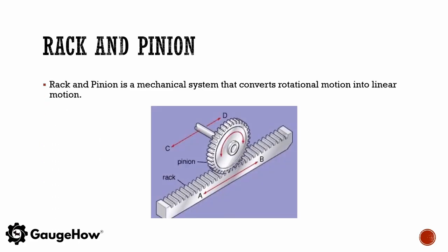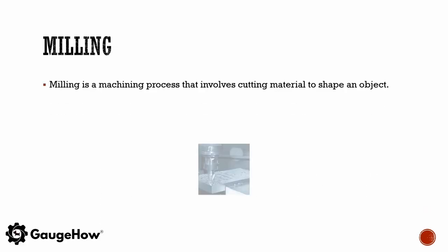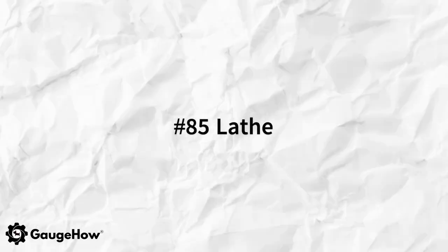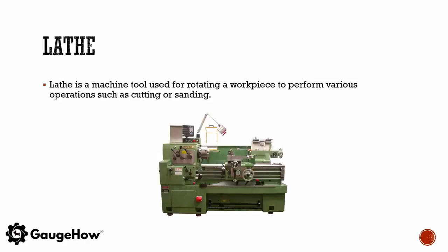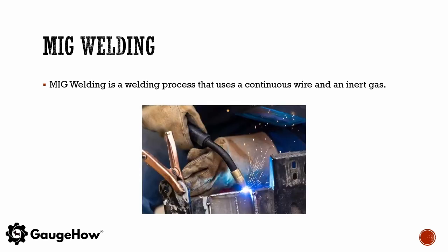A rack and pinion is a mechanical system that converts rotational motion into linear motion. Milling is a machining process that involves cutting material to shape an object. A lathe is a machine tool used for rotating a workpiece to perform various operations such as cutting or sanding. MIG welding is a welding process that uses a continuous wire and an inert gas.